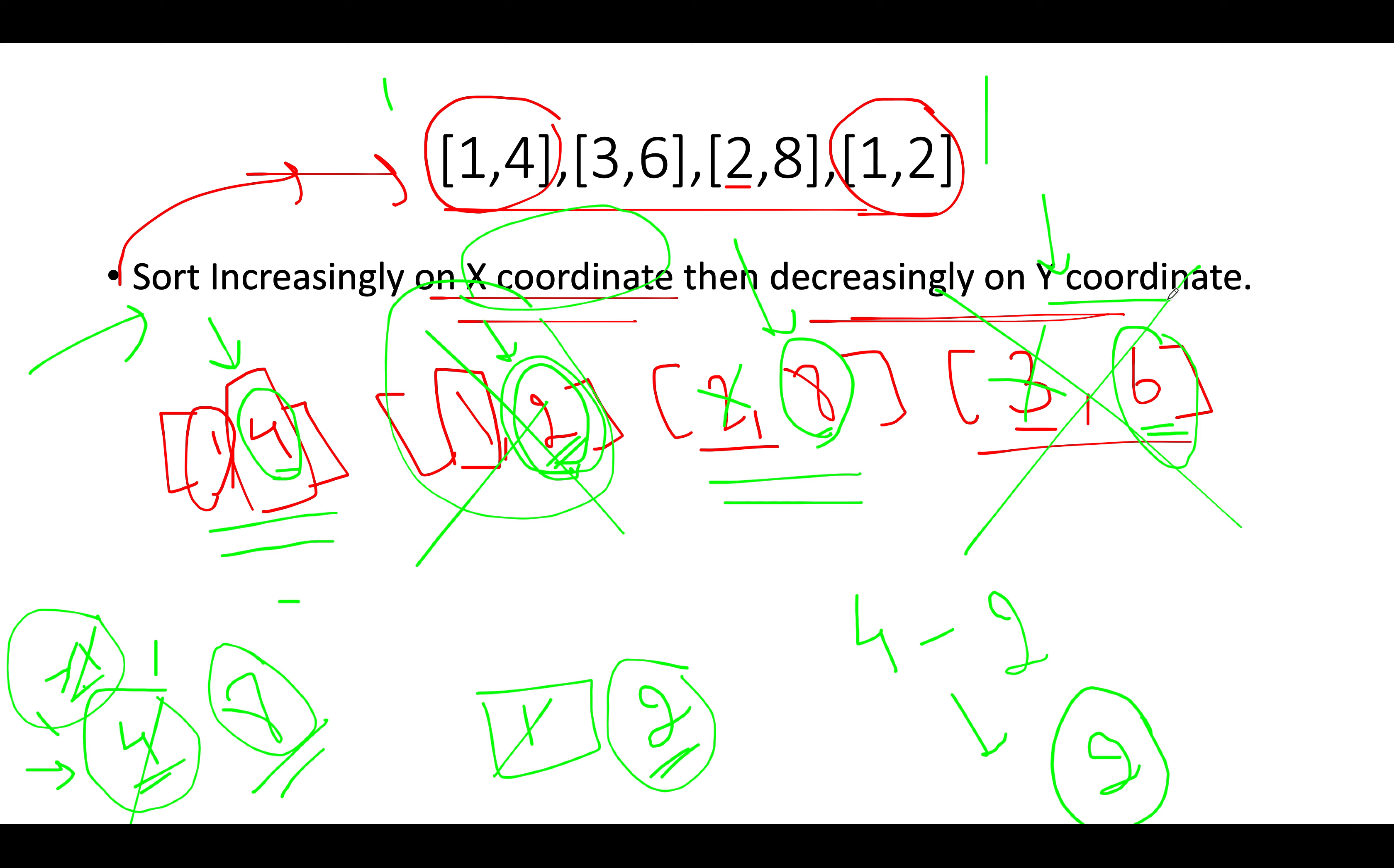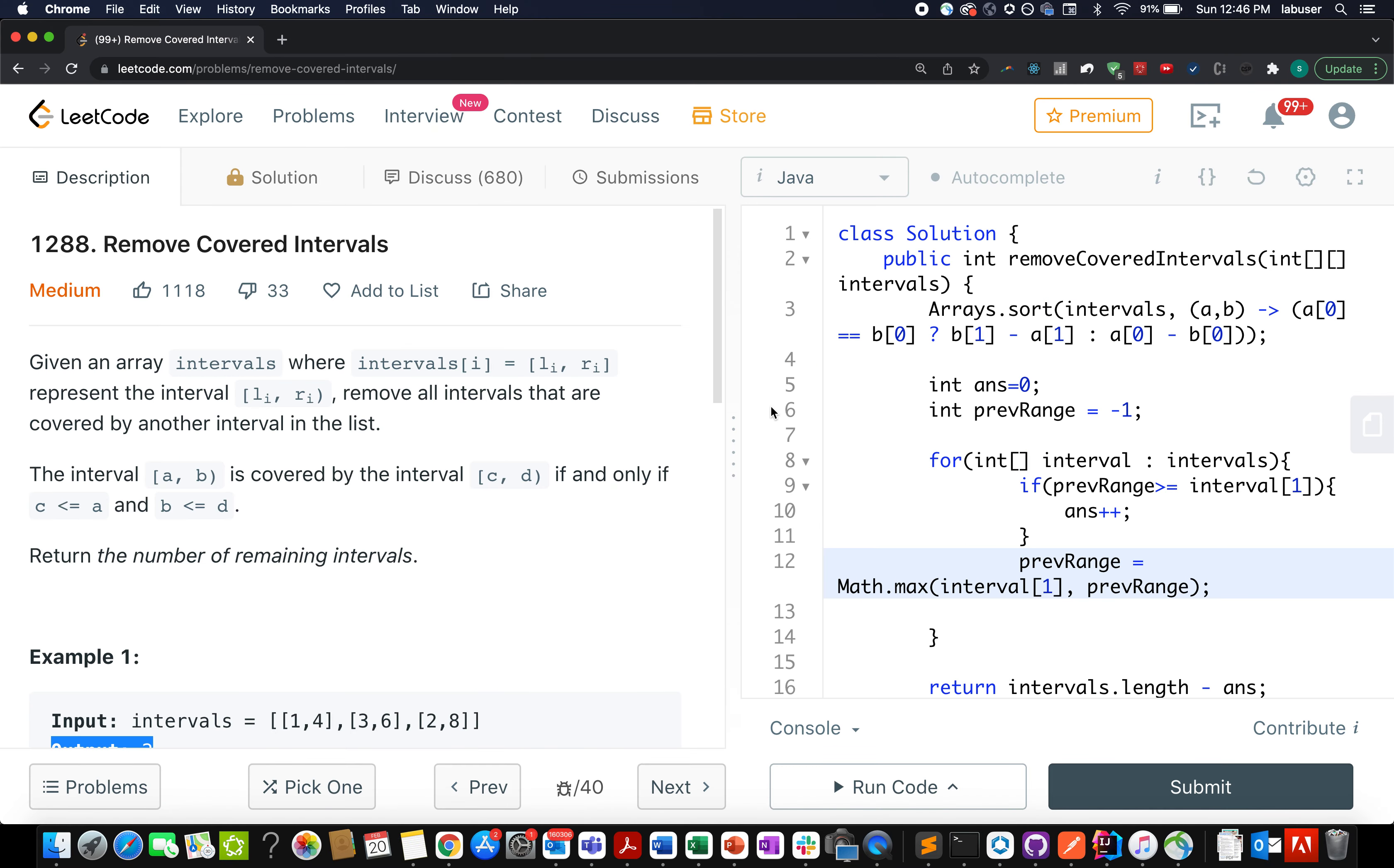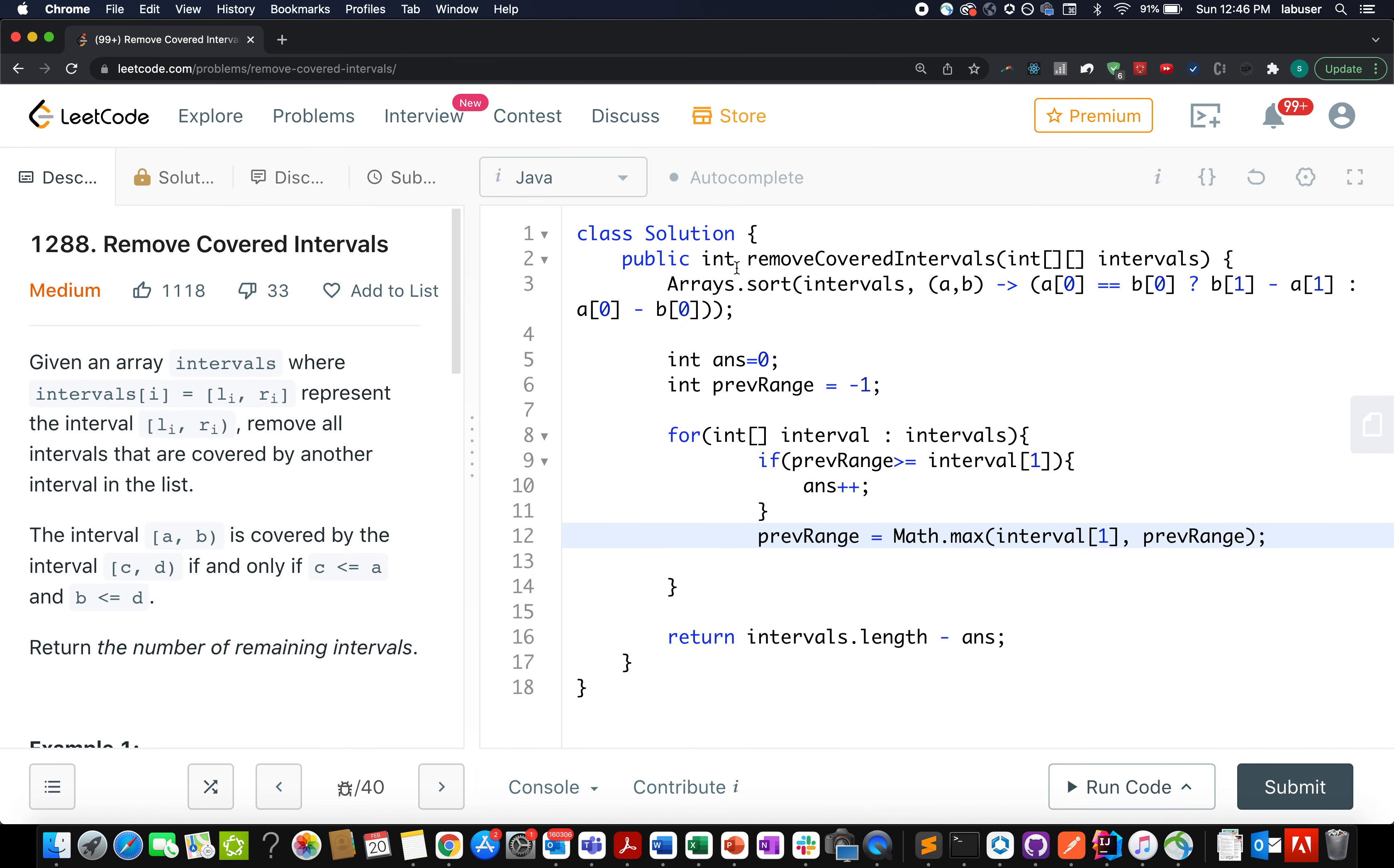Without further ado, let's quickly walk through the coding section where I'll conclude the approach. So as discussed in the presentation, the first thing that I'm going to do is sort the intervals first on the basis of x coordinate. If it happens to be equal, then I'll sort them in decreasing order on the basis of y coordinate. Otherwise, we will go for the increasing x coordinate.